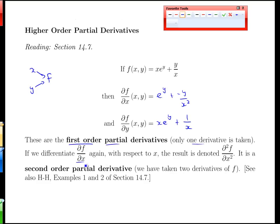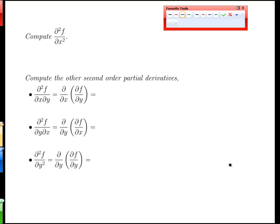The question is: we can do a second derivative, but there are still two variables, x and y. So we have to specify which variable we differentiate with respect to. We write this using the partial derivative symbol: ∂²f/∂x² denotes a second-order partial derivative because we've taken two derivatives, in this case both with respect to x. That's our notation for higher-order derivatives of functions of two variables.